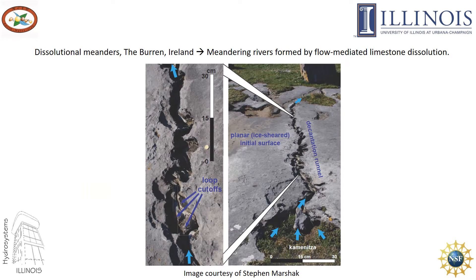The images shown here are of dissolutional meanders at the Burren in Ireland. They are meandering channels formed by flow-mediated limestone dissolution. If you don't know what dissolution is, take a cup of tap water and add a spoonful of salt. Mix it thoroughly until all the salt grains disappear — it means they have been dissolved into the water. The rocks in the picture are formed of limestone, which can be dissolved under certain conditions. These conditions might lead to the formation of dissolutional meanders.